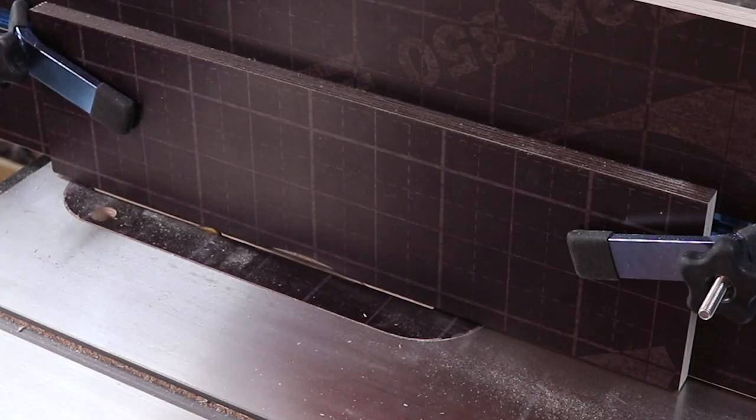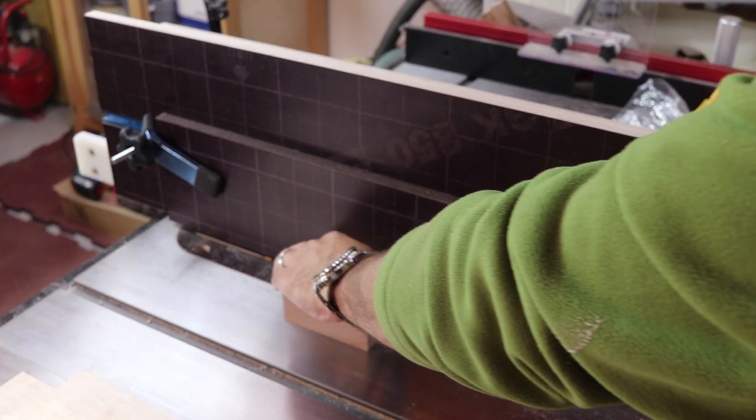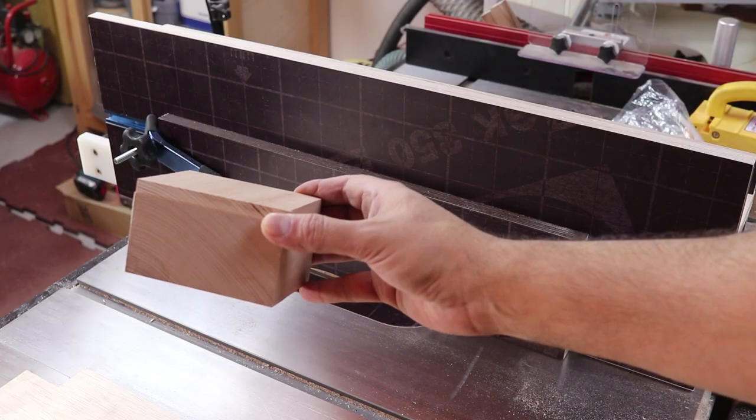You can also use a dado blade to make wider rabbets if you have one, or use a normal blade and make repeatable passes as desired.